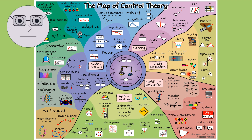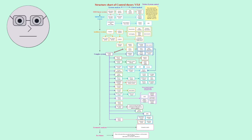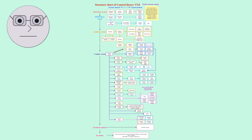Today, control theory has become an essential tool in many fields, including aerospace, robotics, and industrial automation. One of the key benefits of control theory is that it allows engineers to design systems that are stable and robust. By analyzing the behavior of a system, engineers can identify potential problems and design solutions to prevent them from occurring.